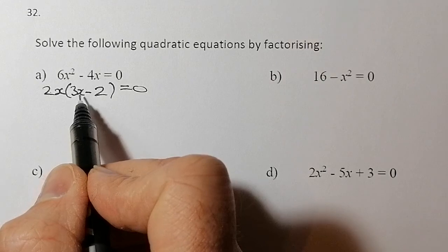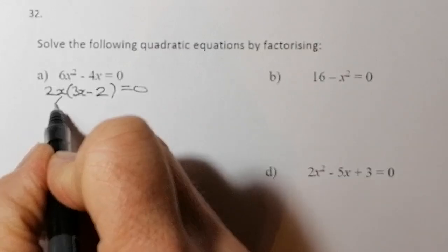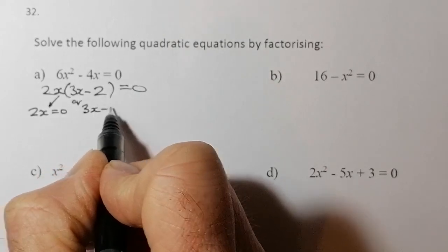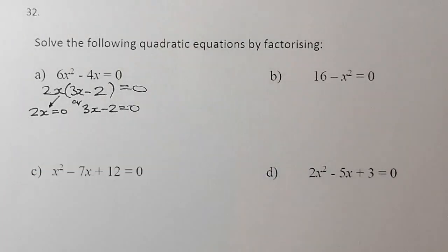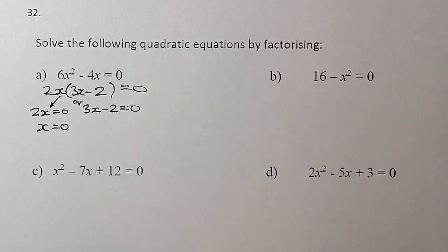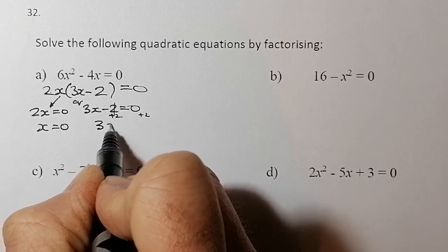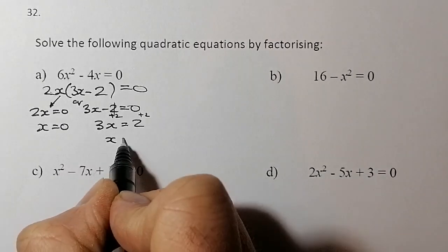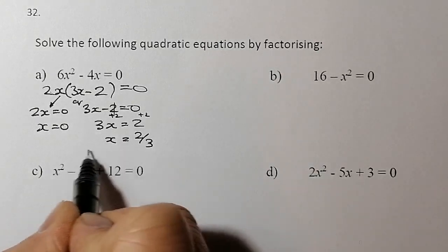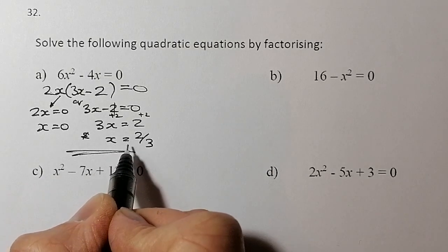Now I solve the factorized quadratic. If two things multiplied equal zero, then either 2x = 0, giving x = 0, or 3x − 2 = 0. Adding 2 to both sides gives 3x = 2, then dividing both sides by 3 gives x = two-thirds. So my two solutions are x = 0 and x = 2/3.